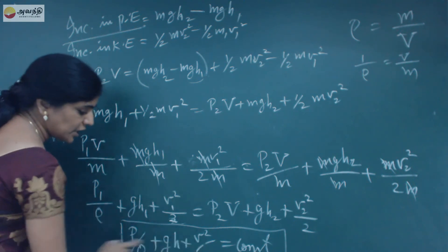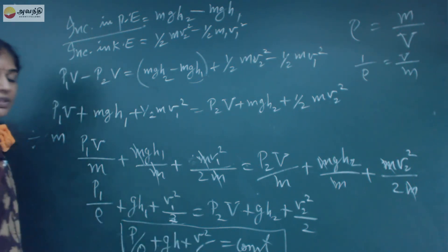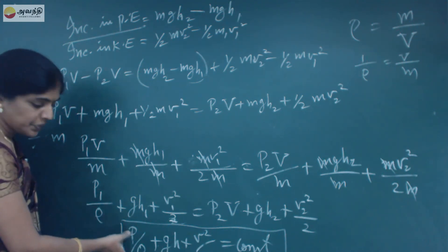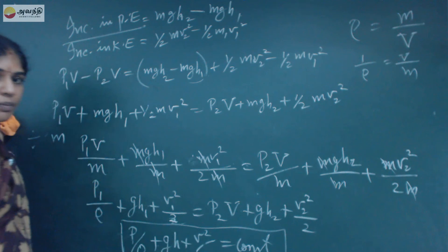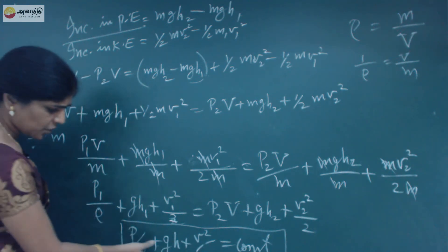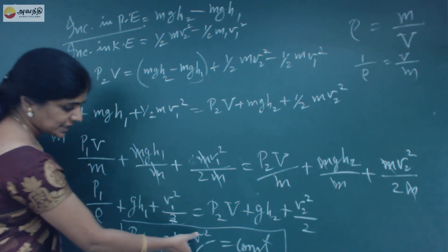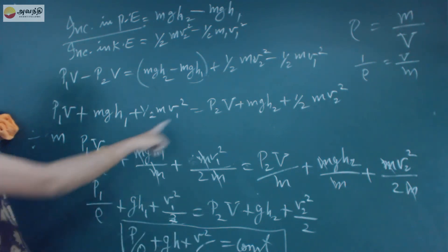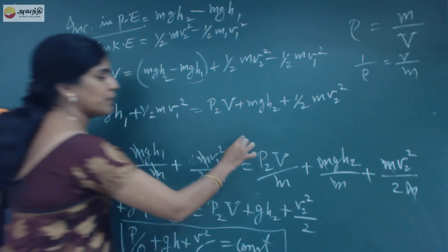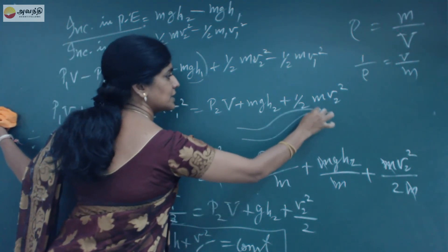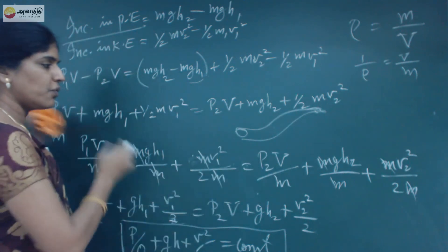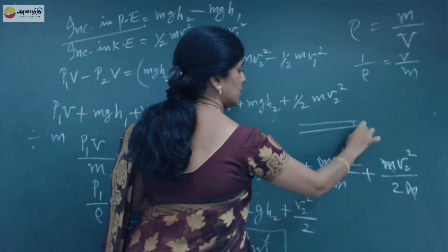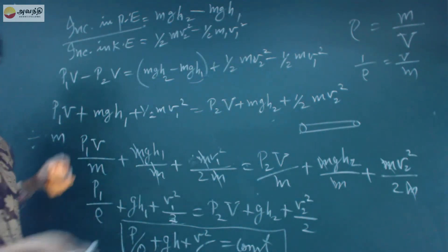All terms in this equation have units of length, so P by rho is called the pressure head, V squared by 2g is called the velocity head, and gH is the gravitational head. The diagram shows the tube is not exactly horizontal.